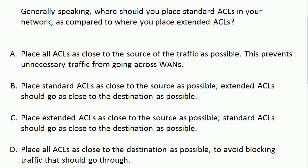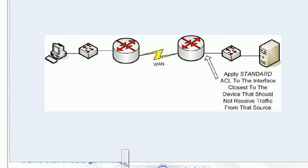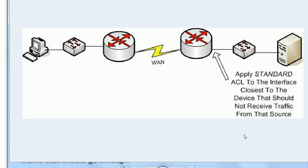That's where the real difference comes in. If it sounds good to block traffic as soon as possible with extended ACLs, that's a great idea. I would apply an extended ACL to an incoming interface at the point closest to the host. So if we're sending from this PC to this server, with a wide area network in the middle, we can use an extended ACL to exactly identify the traffic that should be blocked or permitted, and everything's going to be fine.